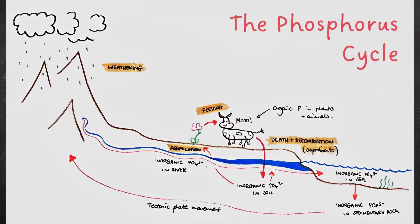Next, we have the phosphorus cycle. The process of weathering may introduce inorganic phosphate ions into waterways like rivers. Rivers then flow into the sea, resulting in phosphate ions accumulating in the sea. These can then become stored in sedimentary rock as it builds up at the bottom of the sea. Tectonic plate movement can result in phosphate ions being moved upwards towards higher areas and soil again, where weathering occurs and the process is repeated. Note that phosphate ions can also be absorbed into the root hair cells of plants by active transport, which, like in the nitrogen cycle, is called assimilation. Animals may then feed on the plants. Plants and animals decompose, facilitated by saprobionts, which returns phosphate ions back into the soil.